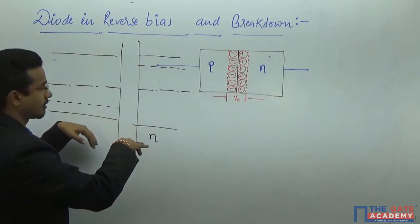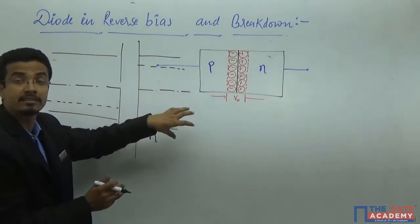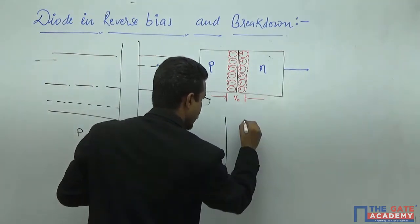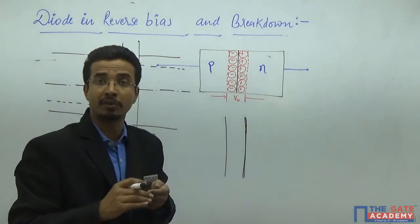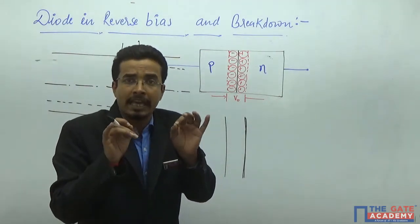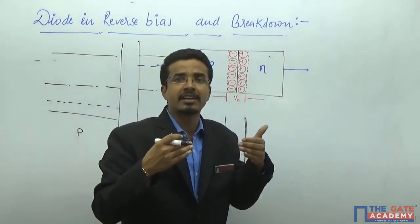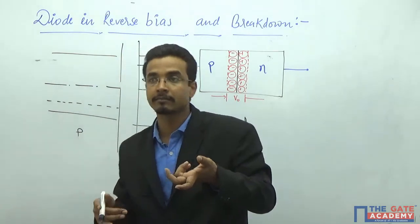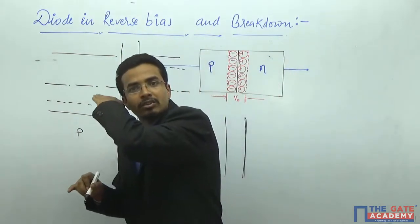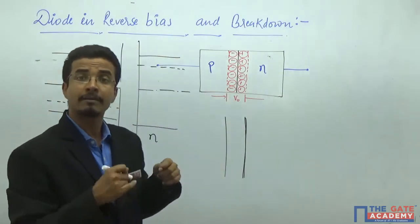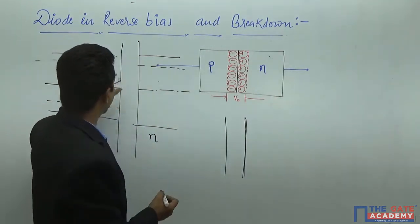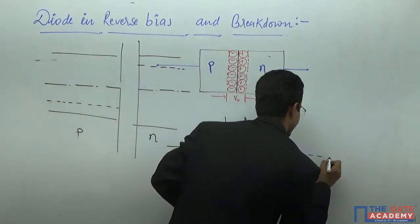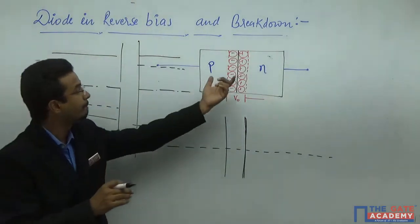As we make the junction, we have isolated p and isolated n. When contact is made, at equilibrium the total current in the device is zero — no charge carrier should travel. When no transaction occurs, the energy is constant throughout the material. The Fermi level is the measure of average energy of the particle. So the Fermi level will be constant throughout the device at equilibrium. This is the Fermi level of the p-n junction diode.